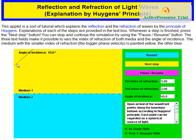Once this wave front hits the interface between the two media, from the moment it hits each point, that point generates a secondary wave travelling with the speed associated with the yellow medium for the reflected wave, and another secondary wave travelling outwards in the blue medium with the speed associated with that blue medium. Since speed is dependent on refractive index, and greater the refractive index the slower the speed of light, in medium 2 the light will travel at a slower speed, while in the yellow medium (medium 1) the light will travel with a higher speed.